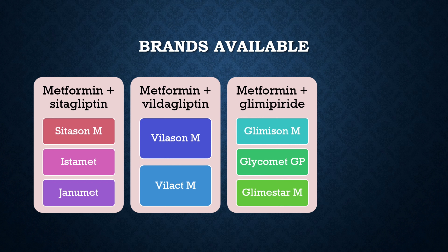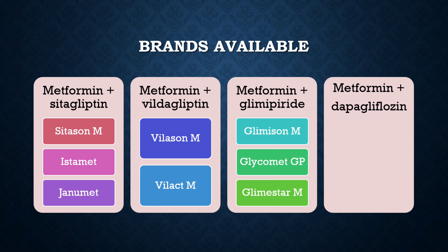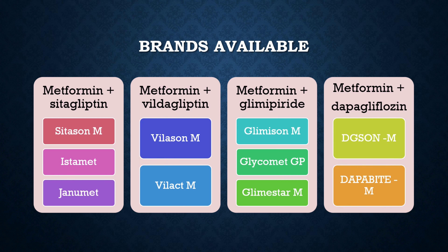These combinations include metformin 500 mg plus glimepiride 1 mg, 2 mg, or 3 mg as per the suffix. You can also go for metformin plus dapagliflozin, an SGLT-2 inhibitor — brands available include Digison M and Dapabite M. This covers the dual therapy OHA for HbA1c between 8.5 to 10.